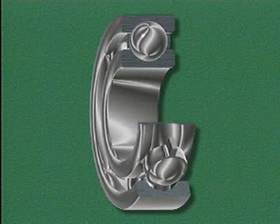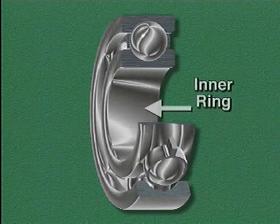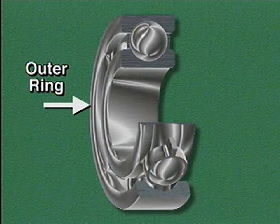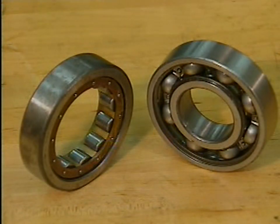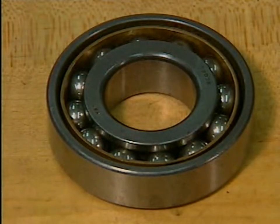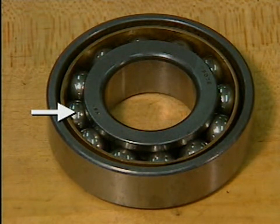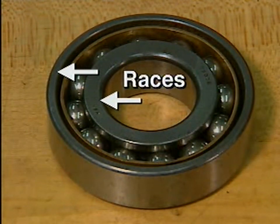While individual bearings may differ slightly, a typical rolling contact bearing consists of rolling elements, an inner ring, an outer ring, and a retainer. The rolling elements in a rolling contact bearing are either balls or rollers made of specially hardened steel. In this example, the rolling elements are balls, and they are set between two hardened steel rings — an inner ring and an outer ring. These rings are often called races.